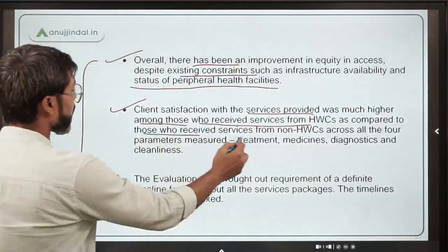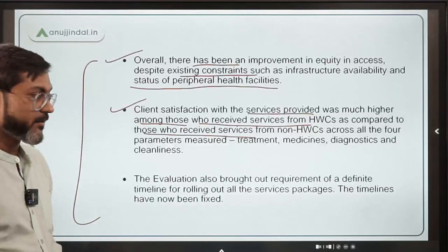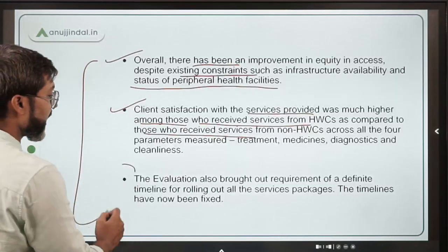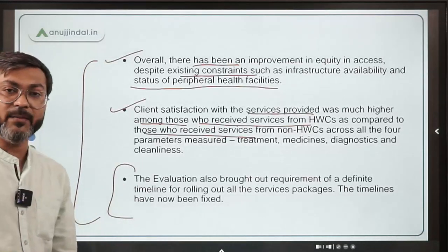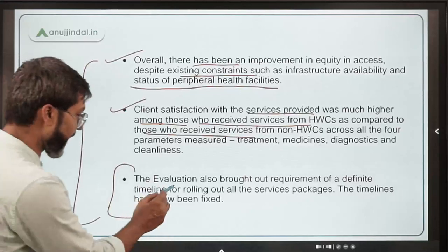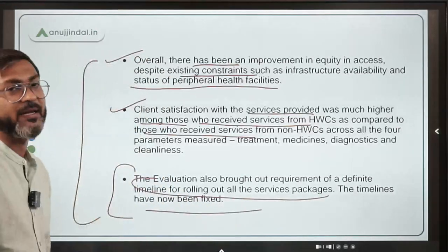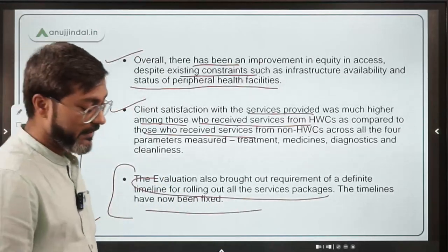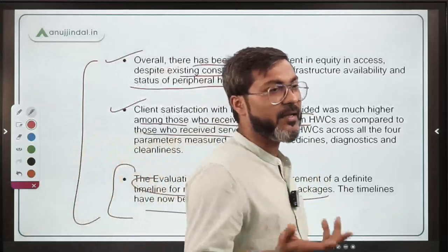The evaluation also brought out the requirement for a definite timeline for rolling out all the service packages. So the correct answer is Option A — AIIMS New Delhi — as that is the organization which, along with GRAM and JHP Go, conducted the assessment of the Ayushman Bharat Health and Wellness Center scheme.